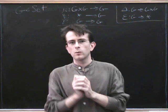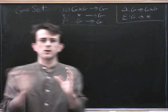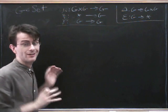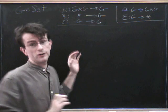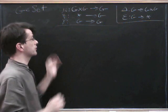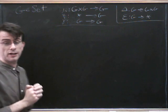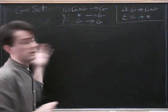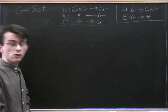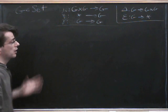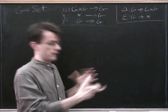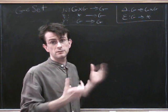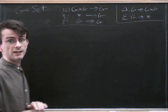So what we've done so far is seen how to define a group object in a tensor category where the tensor product is the categorical product. I've just shown you a good example of a tensor category in which the tensor product is not a categorical product, and we want to be able to define a notion of a group object in some appropriate sense in such a thing.